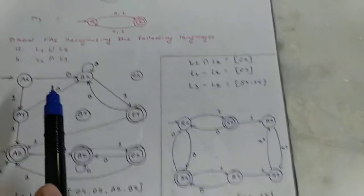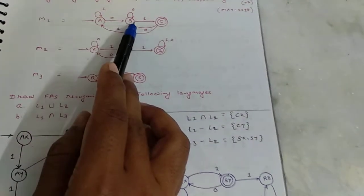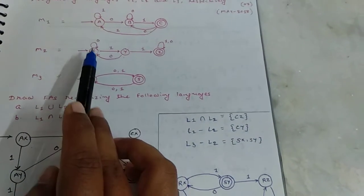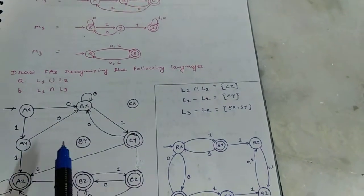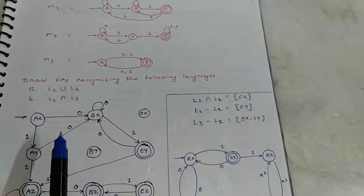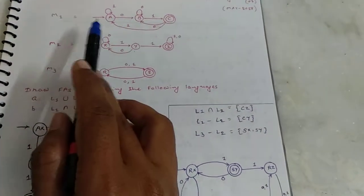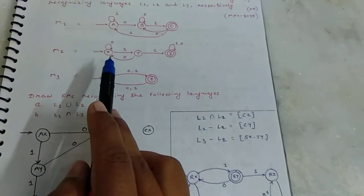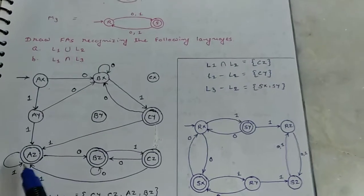For AX to 0, A to 0 state B and X to 0 state X. So AX to 0 state is BX. In previous videos, we already discussed how to find this transition function. From AX to 0, BX, A to 1, A, X to 1, Y. So AX to 1, AY.